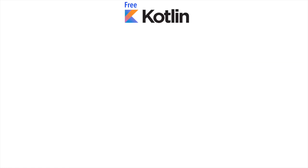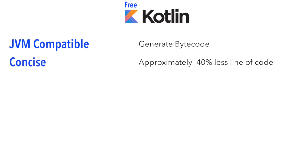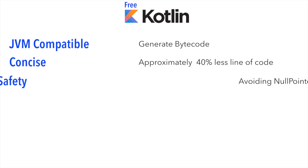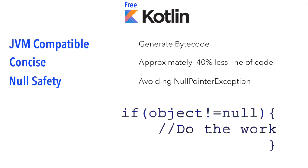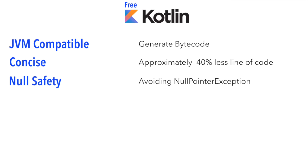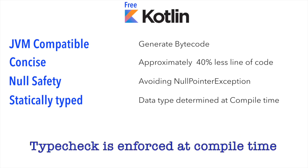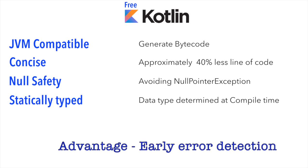Some key things to know about Kotlin: it is JVM compatible, meaning code written in Kotlin gets converted into bytecode compatible with a JVM. It is concise — they claim Kotlin code is almost 40% fewer lines compared to Java. It has null safety, making null checks easier with fewer lines of code. And it is a statically typed programming language, meaning data types are determined at compile time, so there is less likelihood of runtime errors.